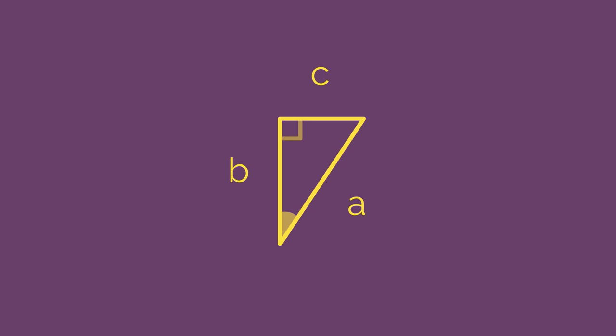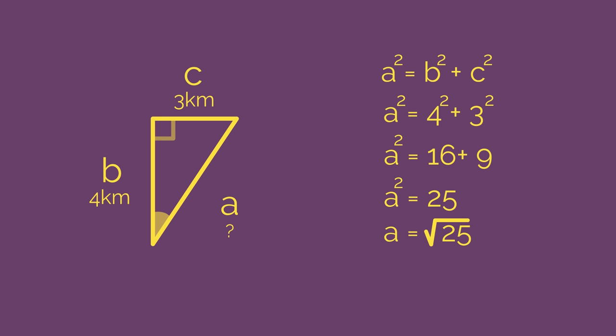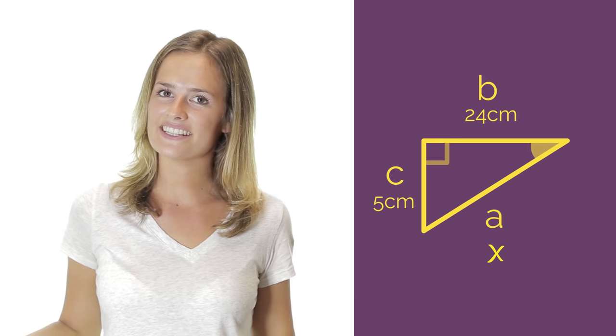This is where Pythagoras' theorem comes in handy. We can label our sides as A, B and C. And using A squared equals B squared plus C squared, substitute in the numbers and we get 4 squared plus 3 squared. So A squared equals 16 plus 9, which is 25. Now be careful, the answer isn't 25. This is just A squared, the size of the whole square. We just want A. We need to square root the answer and so A equals 5.